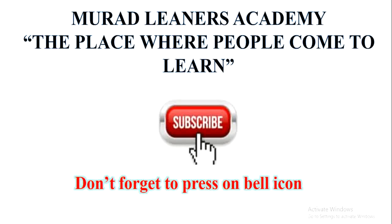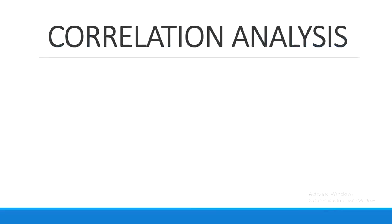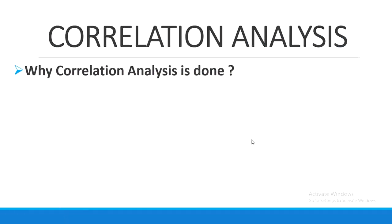Welcome to Radhanas Academy, the place where people come to learn. First is correlation analysis. Why do we use correlation analysis? Correlation analysis is done to see the relationship of our variables. It tells us the relationship between our independent variables and dependent variables, and also tells us the impact which independent variables are putting on the dependent variable. It also tells us whether the relationship between variables is positive or negative.